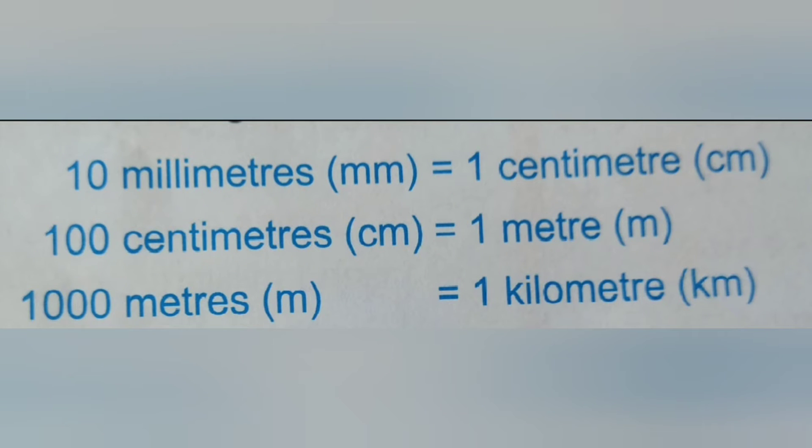10 millimetre is equal to 1 centimetre. Millimetre is the smallest unit of distance, whether it's used to measure width, length or height. 100 centimetre is equal to 1 metre, and 1000 metre is equal to 1 kilometre. Kilometre is the longest distance, then metre, then centimetre, and the smallest is millimetre.